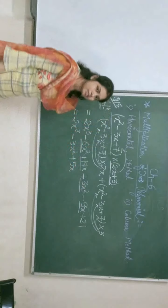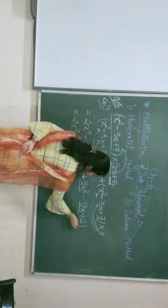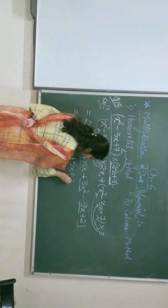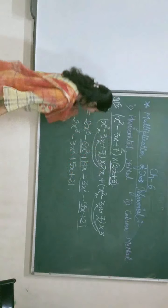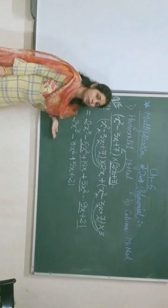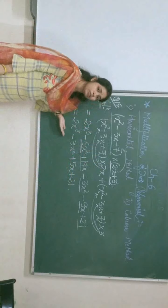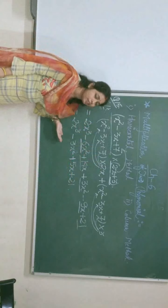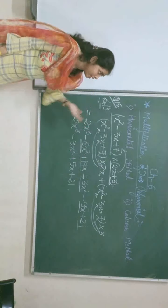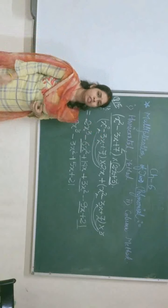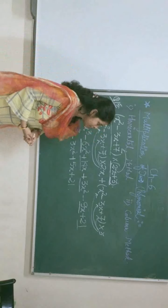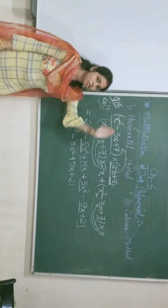And at last, a constant term is there, so we have to write 21. Yes, this is the process, this is the method. Which method? Horizontal method for solving multiplication of 2 polynomials. Now next, we are going to discuss the second method.